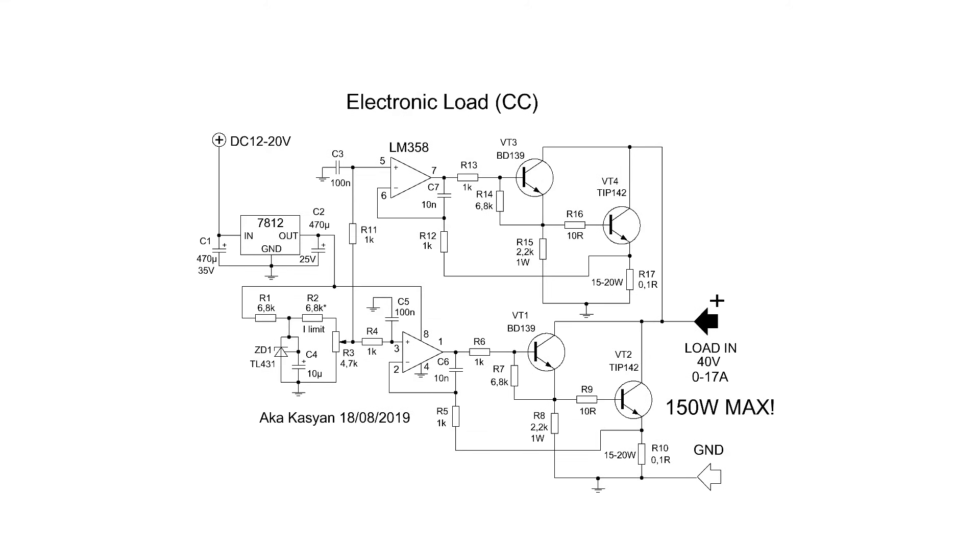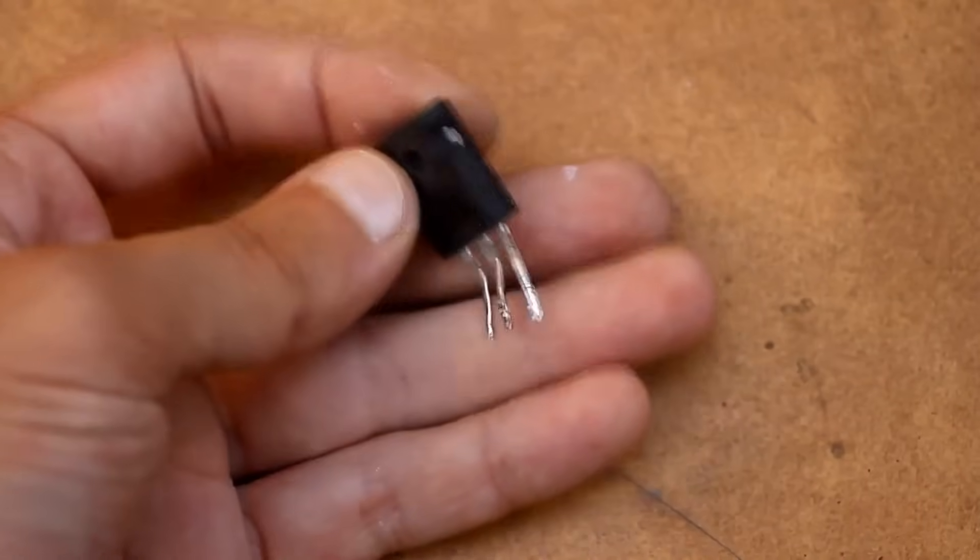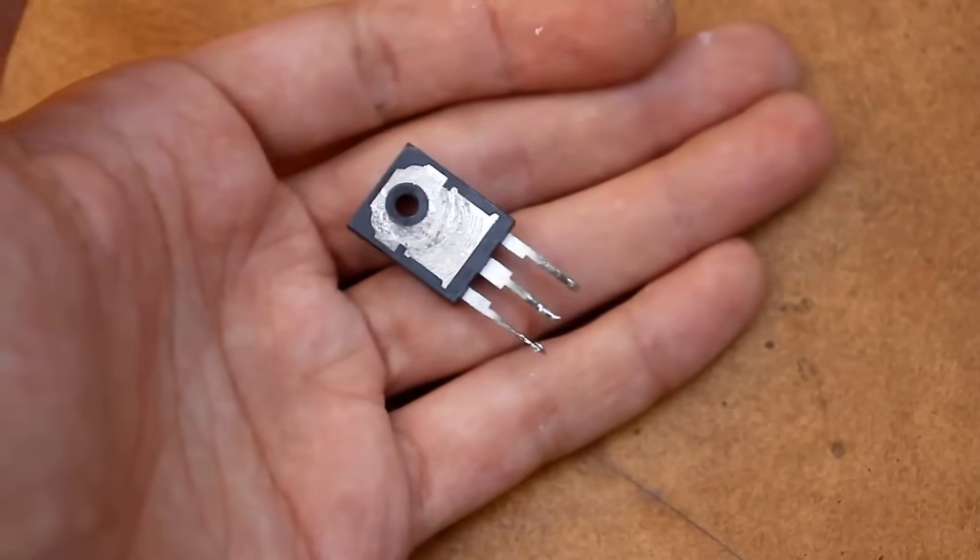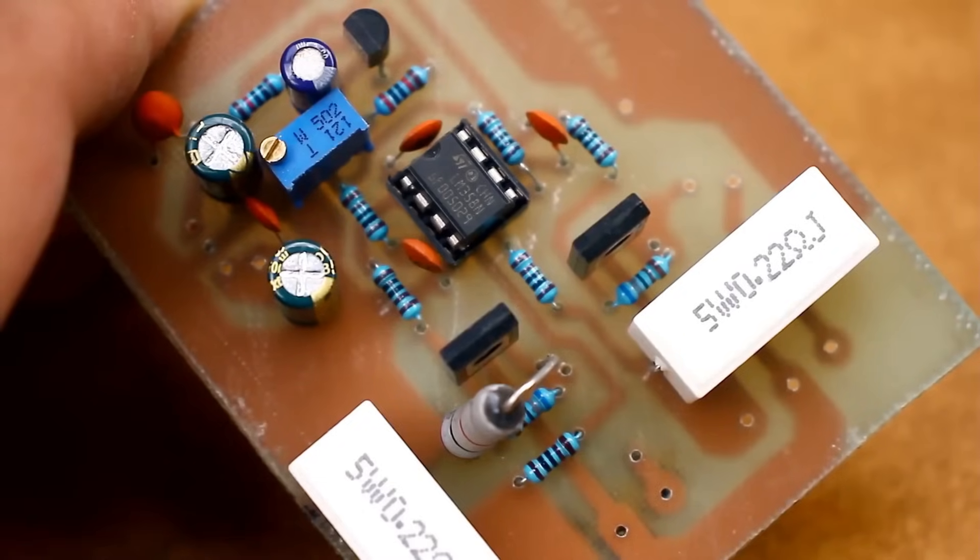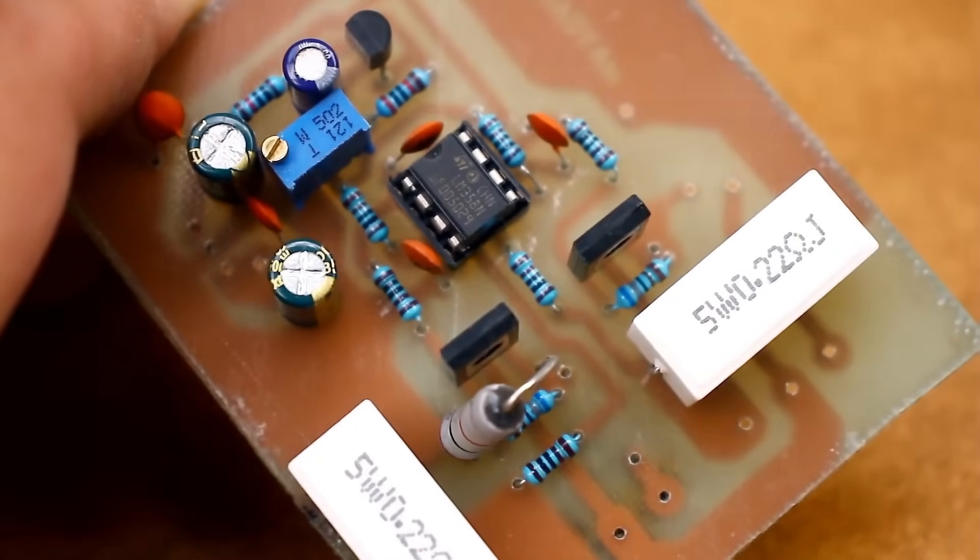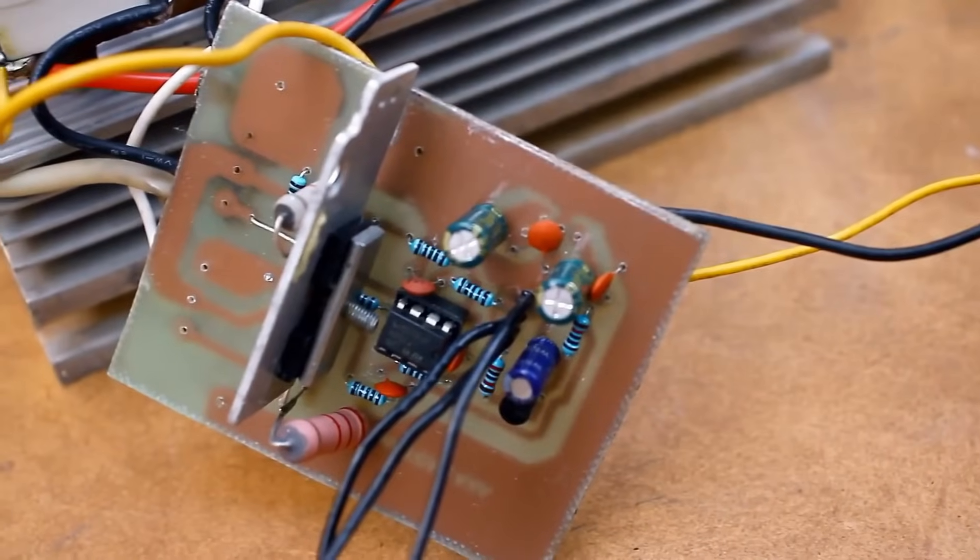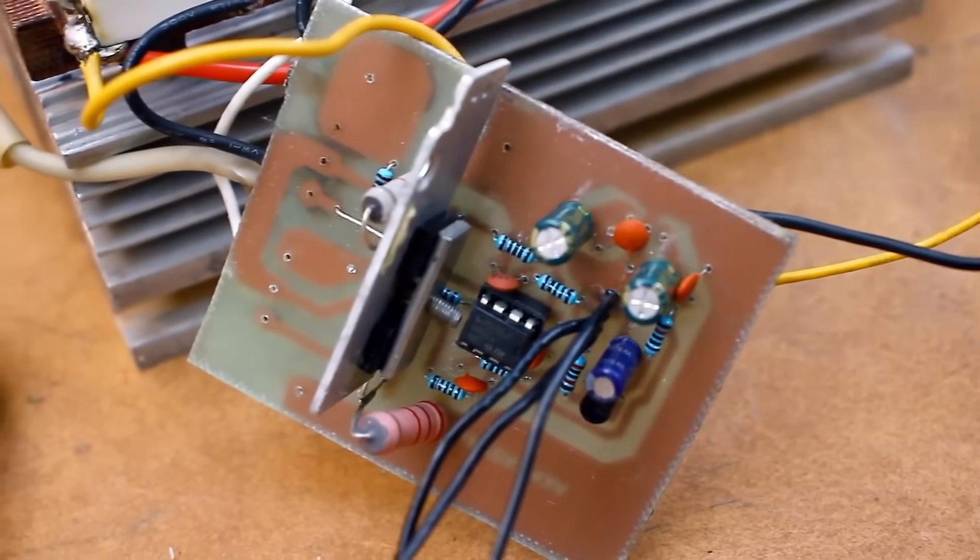As you can see in the circuit, I use composite transistors which are easy to control. But you can also use regular ones. This is exactly why there is a driver in the circuit, which is intended to offload the microchip. The driver takes over all the control, and in fact, together with the power transistor, forms an analog of a composite transistor.